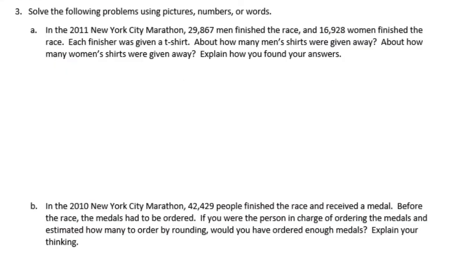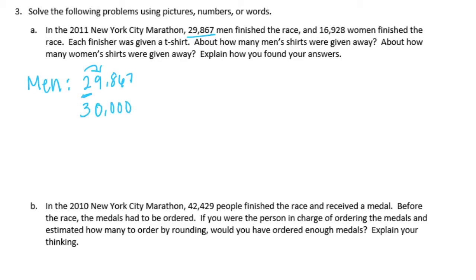Number 3: solve the following problems using pictures, numbers, or words. In the 2011 New York City Marathon, 29,867 men finished the race and 16,928 women finished the race. Each finisher received a t-shirt. About how many men's shirts were given away? I'm going to round to the ten thousands place. The ten thousands place is the two; next to it is a nine — five or higher — so the two rounds up to a three and everything else becomes zeros. There were about 30,000 men's shirts.